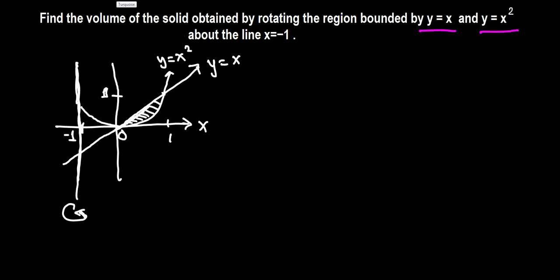Our sample slice will be perpendicular to this line, meaning it's horizontal with a small width delta y. That suggests our volume formula will be in terms of y, integrating the area of the sample cross-section from 0 to 1.